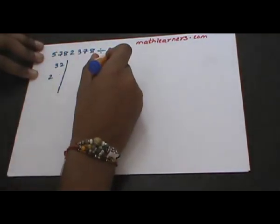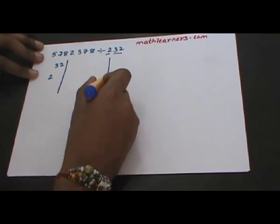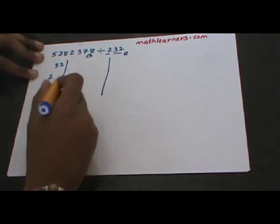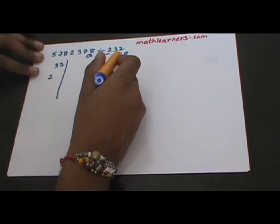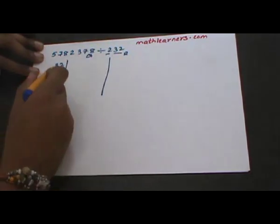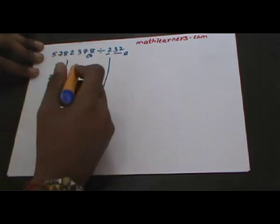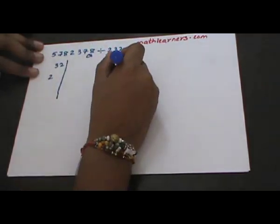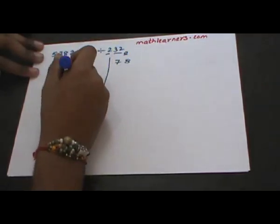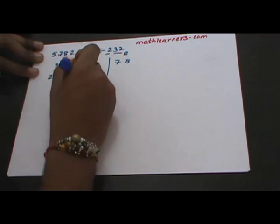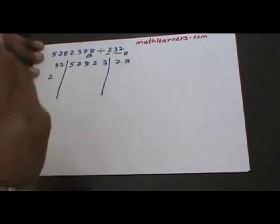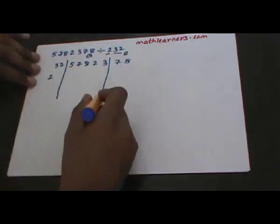The dividend is split into two parts — quotient and remainder — such that the remainder will have exactly the same number of digits as the flag. The flag has two digits, so the remainder part will have 78, and 57823 will be present in the quotient part.